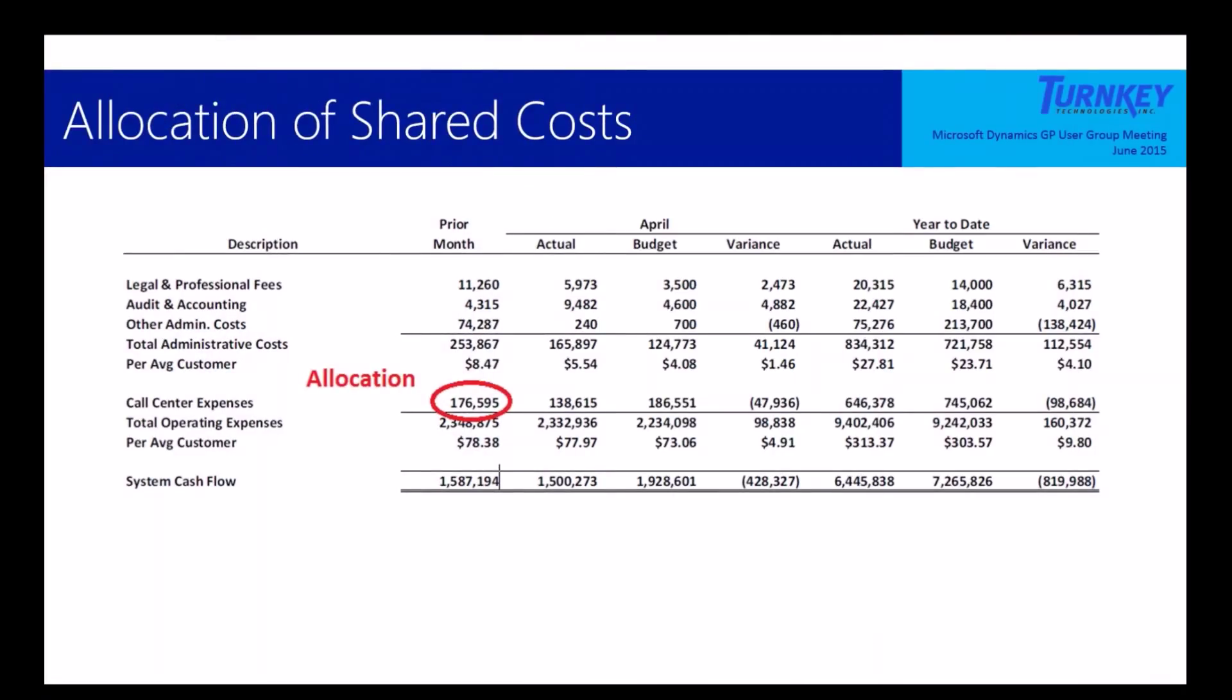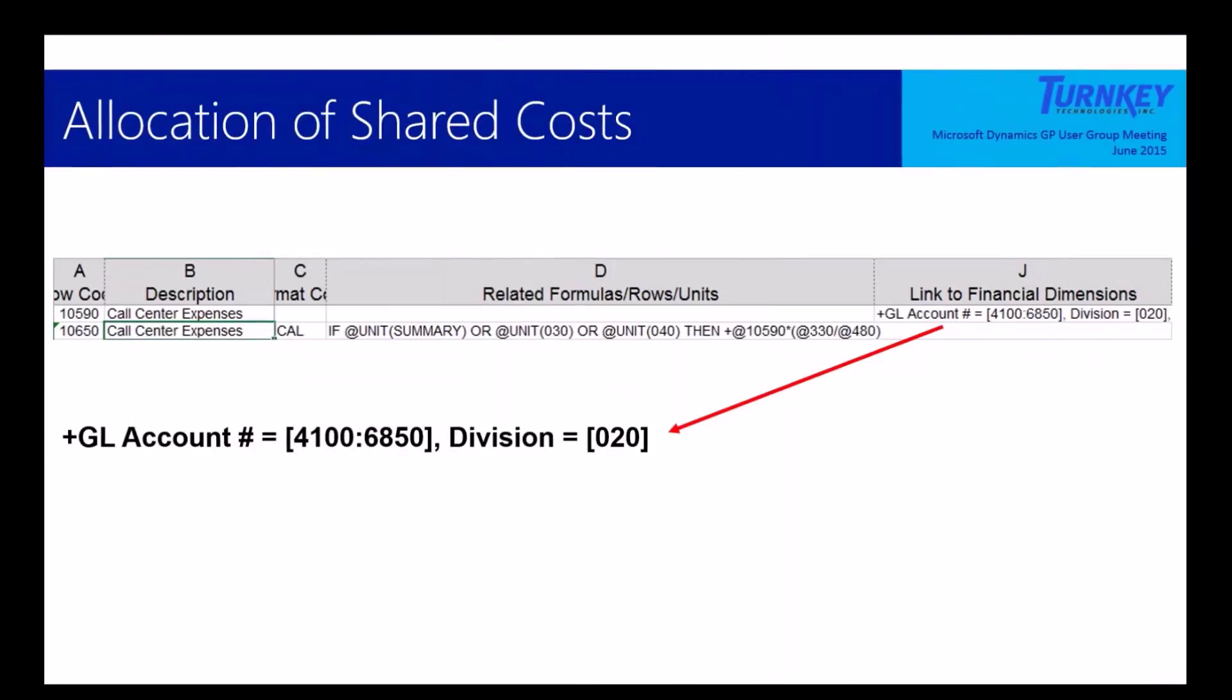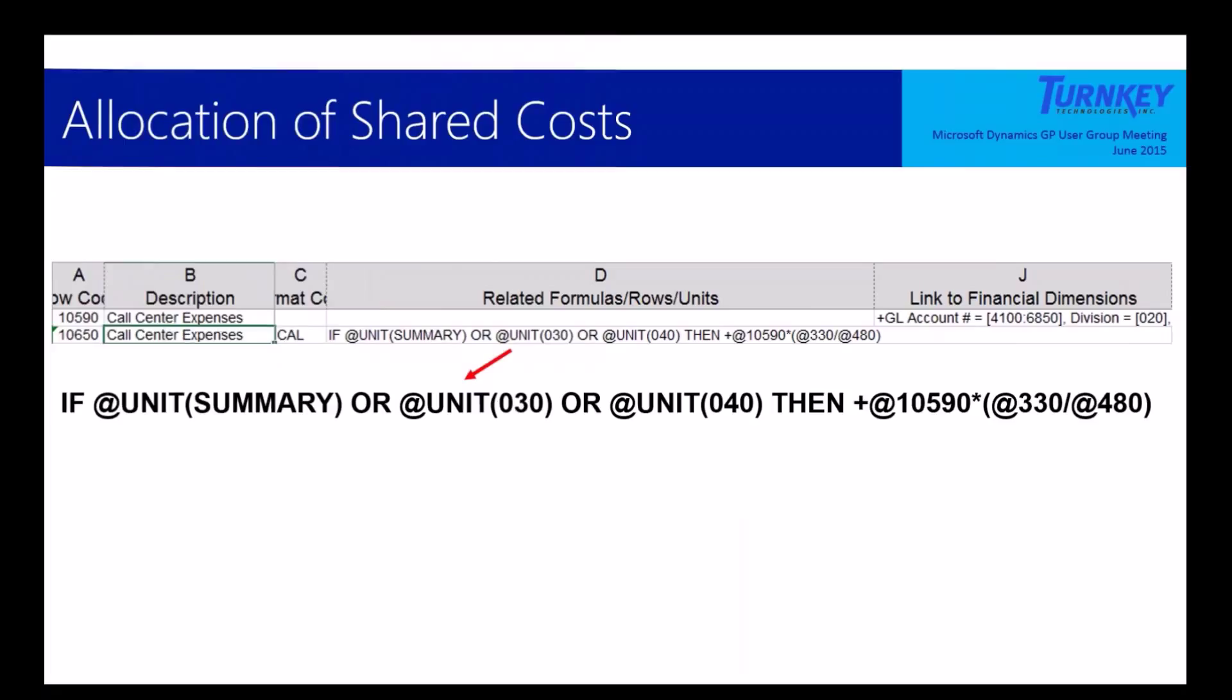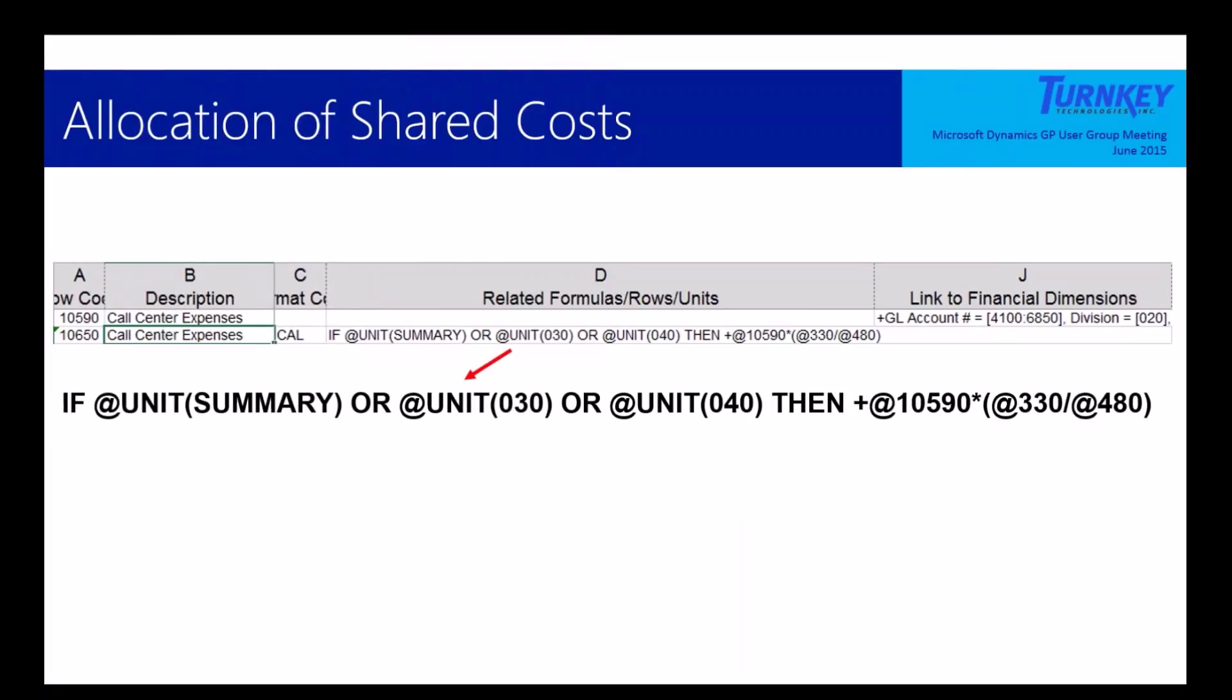Let's look at those allocation of shared costs. So here we've got the East Division. For the month and April year-to-date is the East operating expenses here, and we get the call center. And all I'm showing you is that this is the portion of the total call center that the East Division is getting. So then here's the math for that.